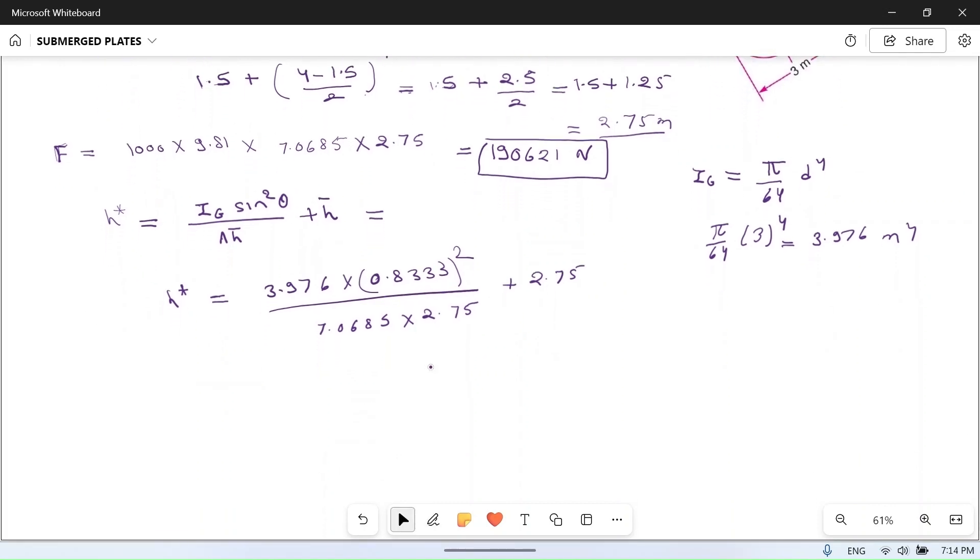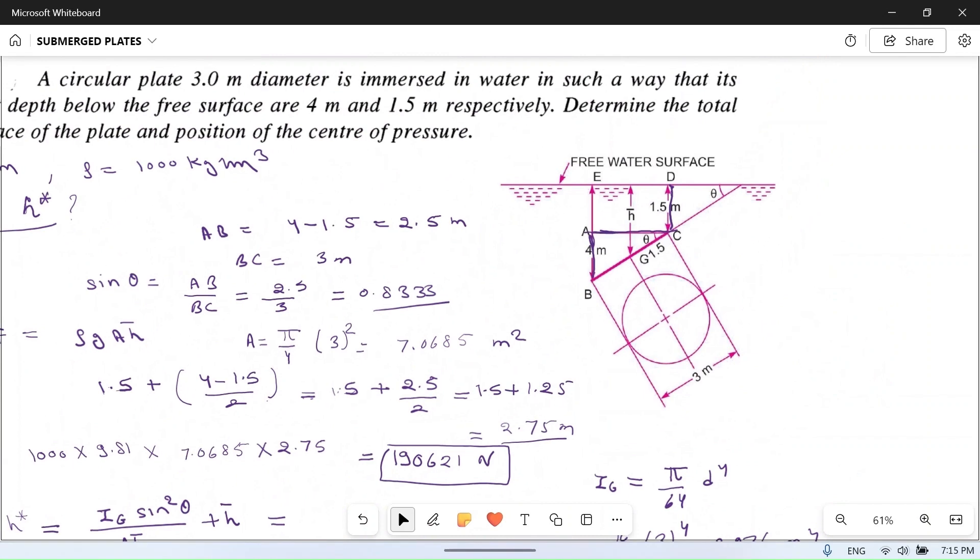If you calculate it, you will get 2.75 plus 0.142. If you add these two, you will get 2.891 meters. This is the depth of center of pressure from the free surface of liquid.